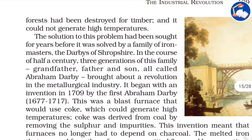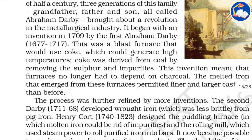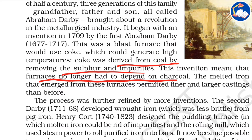The solution to this problem was sought for years before it was solved by the Darby family of iron masters — the Darbys of Coalbrookdale. It was a trio — grandfather, father, and son — all called Abraham Darby. The first Abraham Darby invented the blast furnace that could use coke, derived from coal by removing sulfur and impurities. This meant furnaces no longer had to depend on charcoal, and the melted iron that emerged permitted finer and larger castings than before.